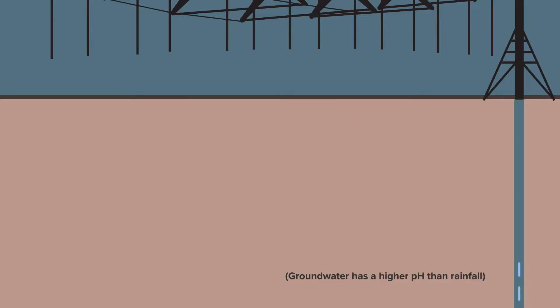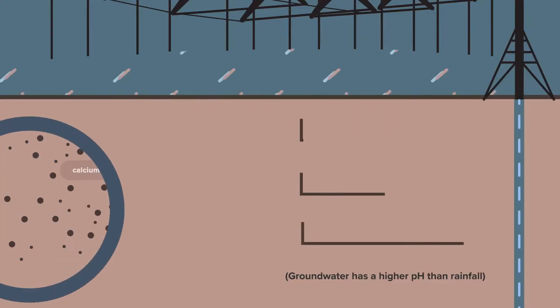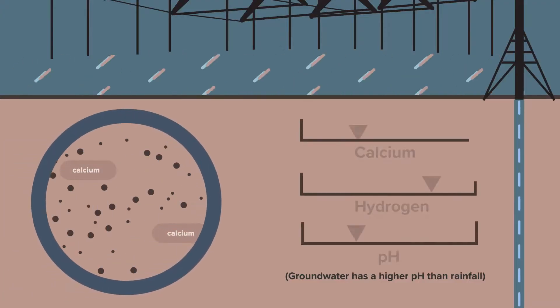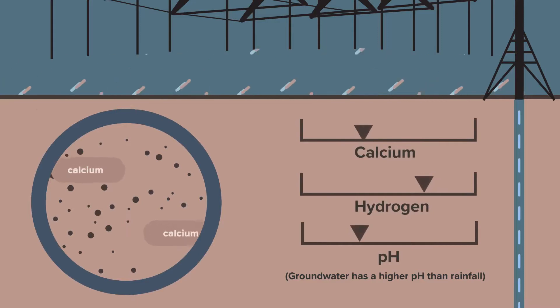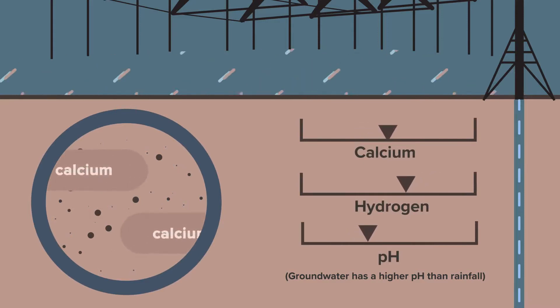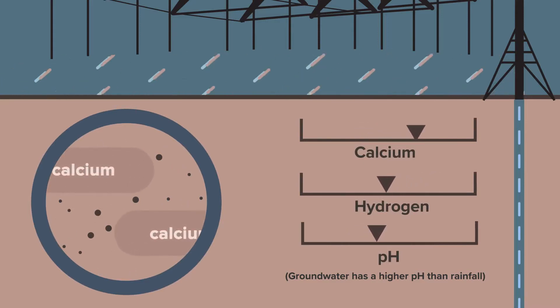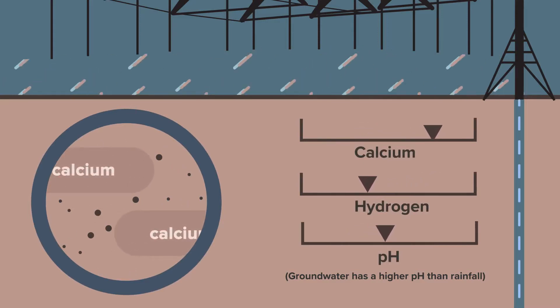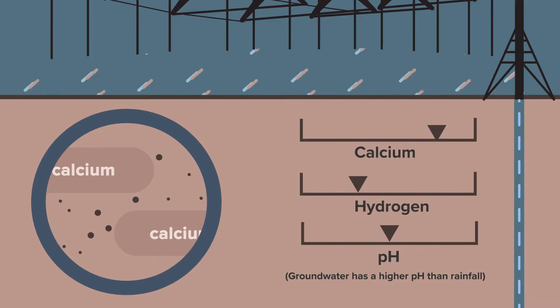However, irrigation water doesn't have the same effects as natural rainfall does. Oftentimes with your irrigation water, you're getting other cations — calcium, for example. And that calcium will build and bind to the soil more readily than hydrogen will, so it's not going to have as huge of an effect on that overall soil pH.